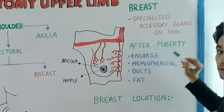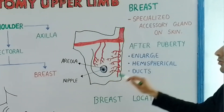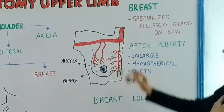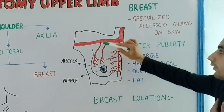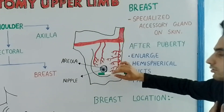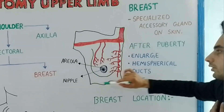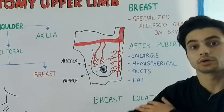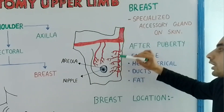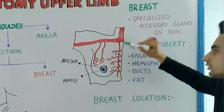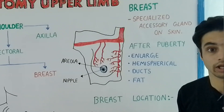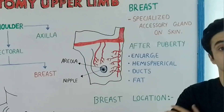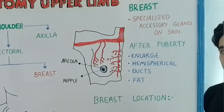The question is: why do we study the breast in upper limb anatomy? Because on the lateral side there are certain arteries supplying the breast which are in relation with the upper limb. On the medial side, the blood supply comes from the chest cavity, so we can study the breast in thorax anatomy as well as in upper limb anatomy.